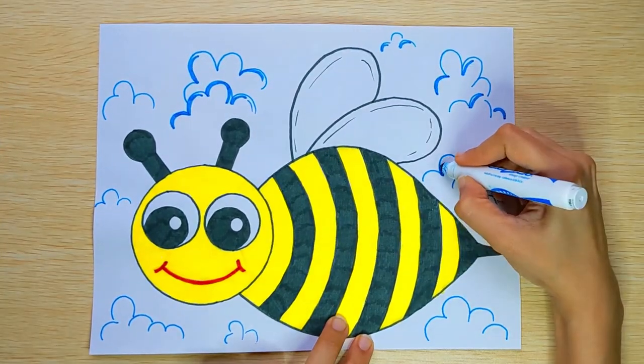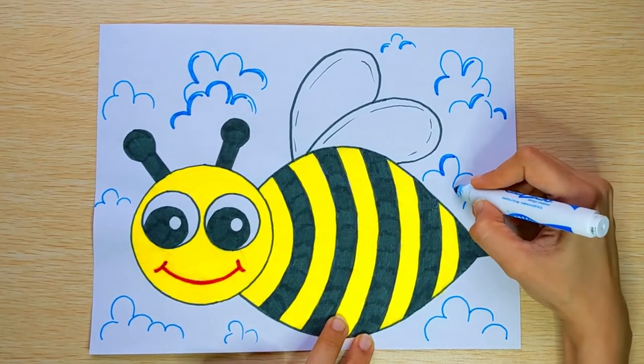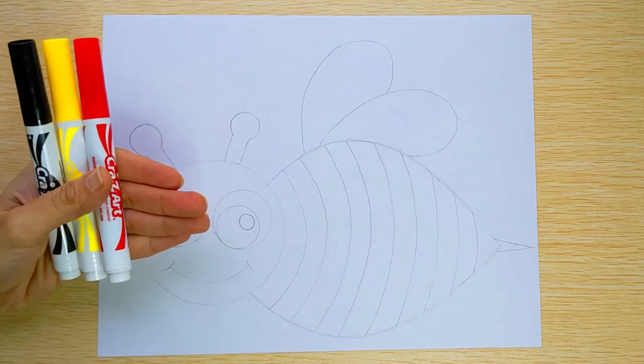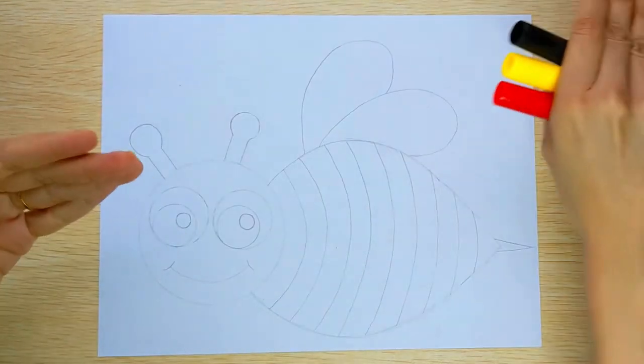Here I have a white A4 size paper and markers in three colors: red, yellow, and black.